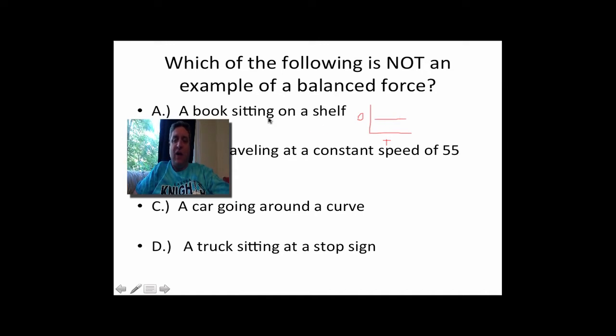So a book sitting on a shelf, if this is distance and this is time, the graph's going to be flat. Distance is not changing because it's not going anywhere. A flat line shows no acceleration. A car traveling at a constant speed of 55 miles per hour, same kind of thing. I've got a line like this with constant speed. I'm not speeding up or slowing down or changing direction. Still no net force.